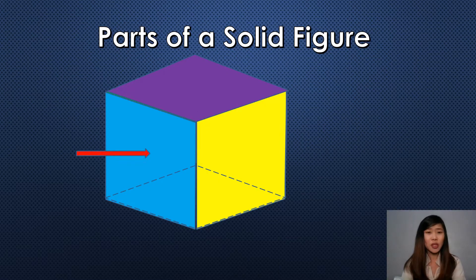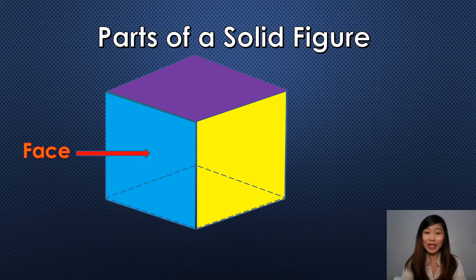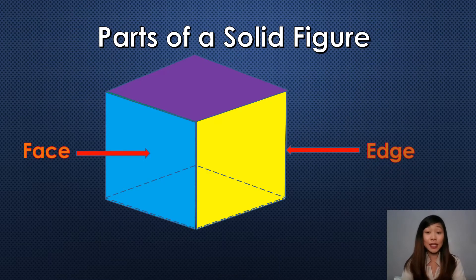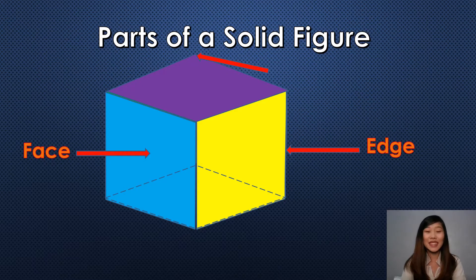What do we call this part of the figure? Correct! This is called the face. How about this one? Brilliant! This is called the edge. And this one? Exactly! This is called the vertex.